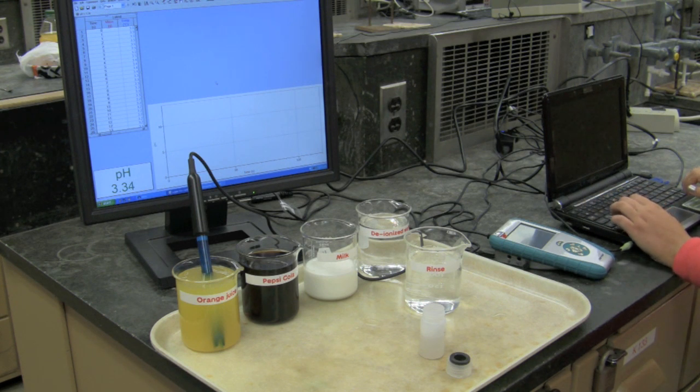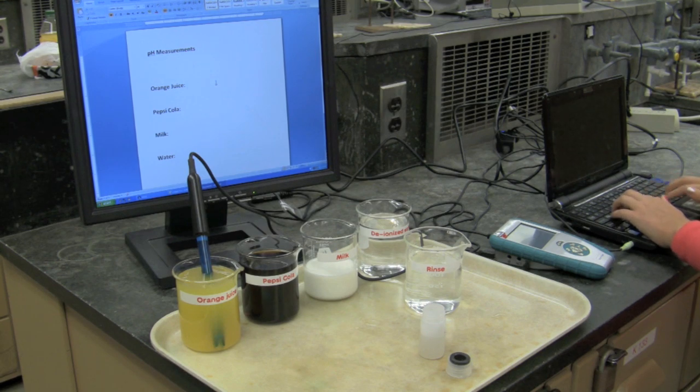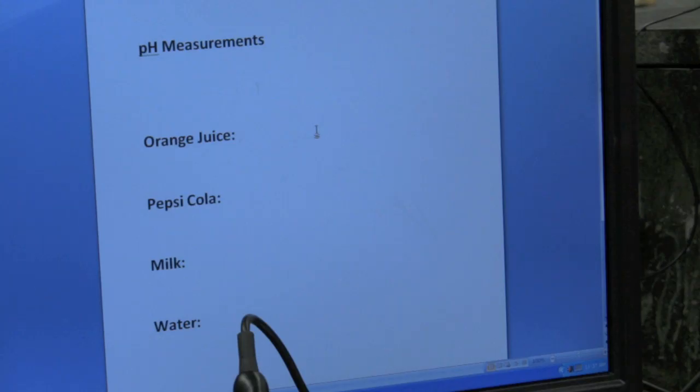pH equals 3.35. Alt-Tab, Document 1-Microsoft Word Non-Commercial Use, 3.35. That was it, right?